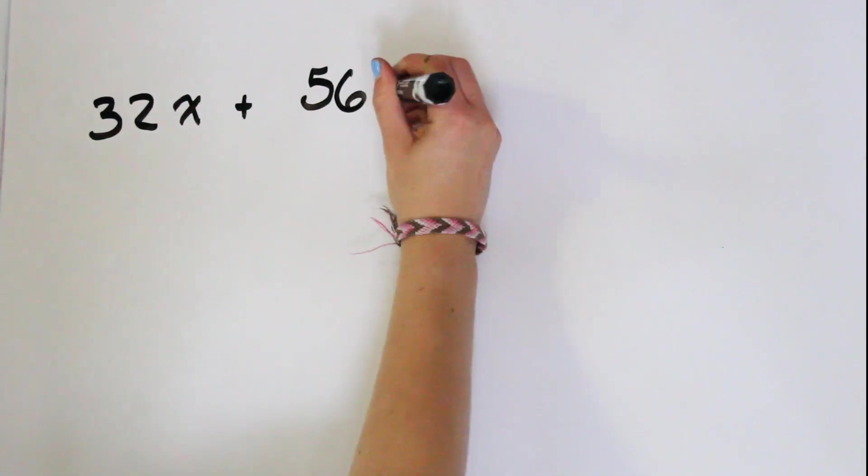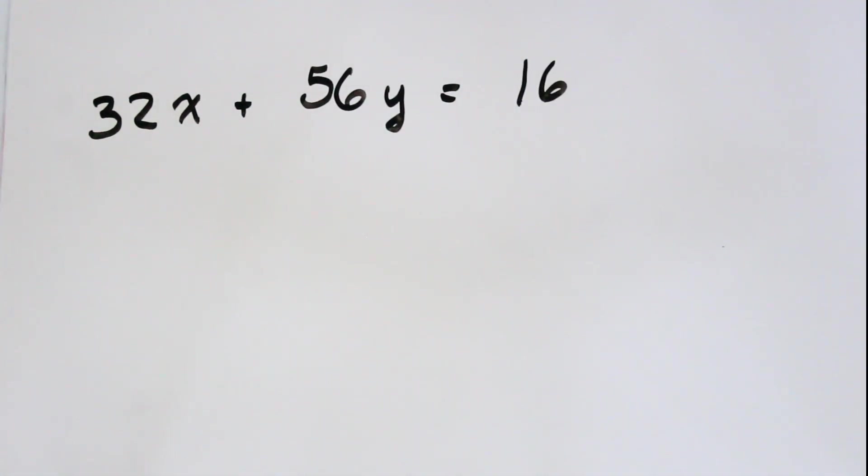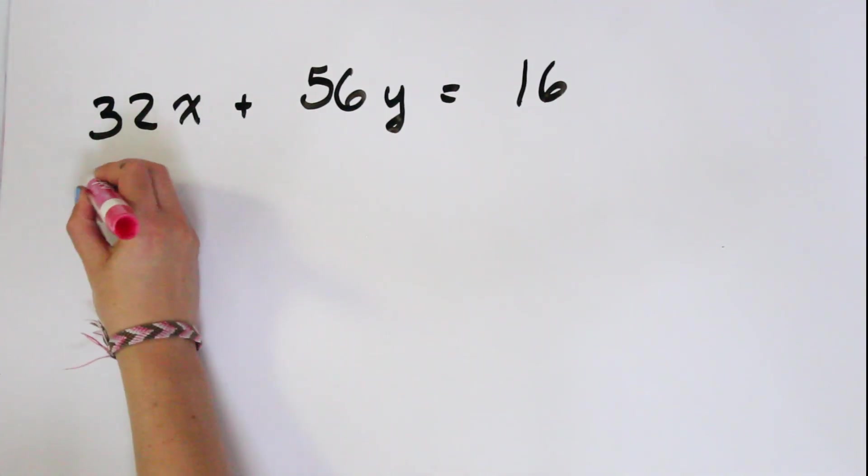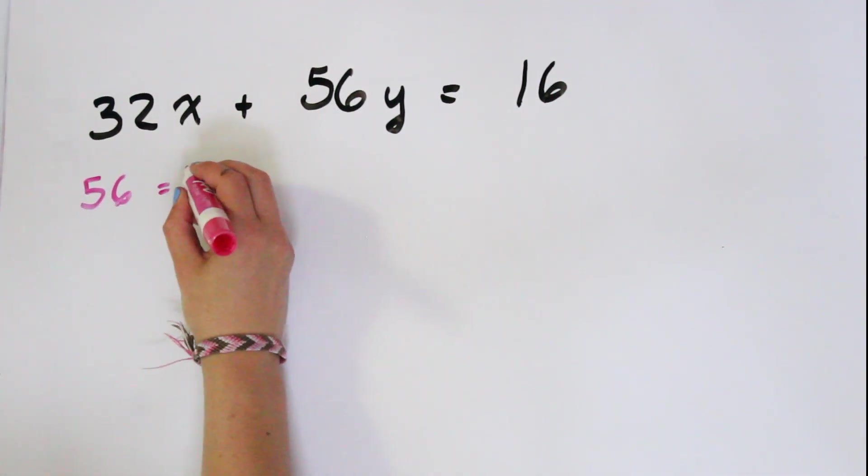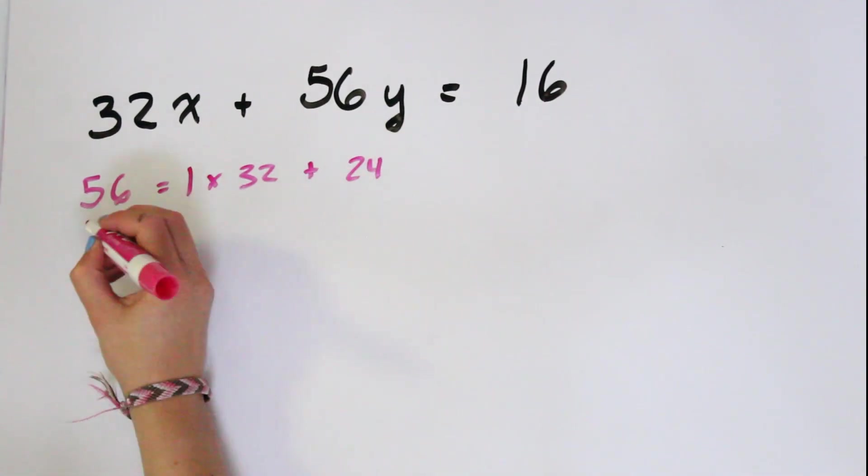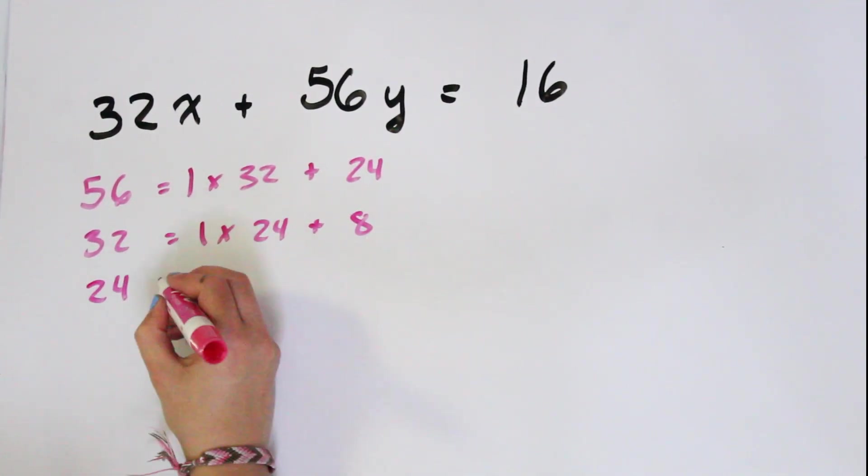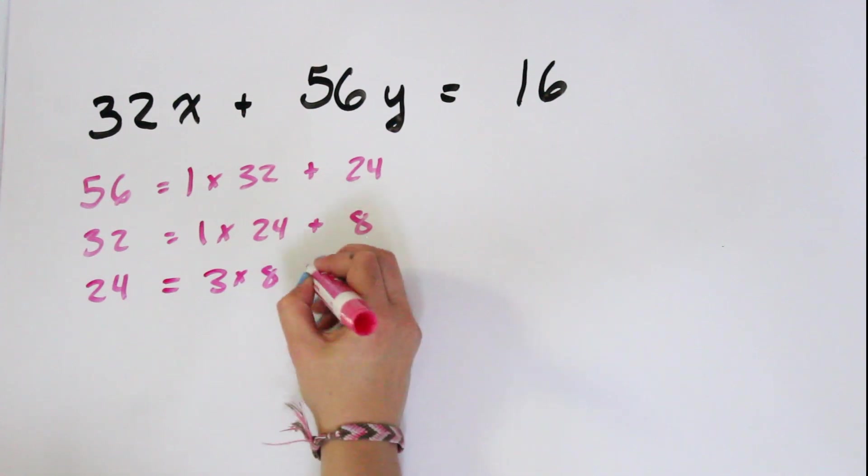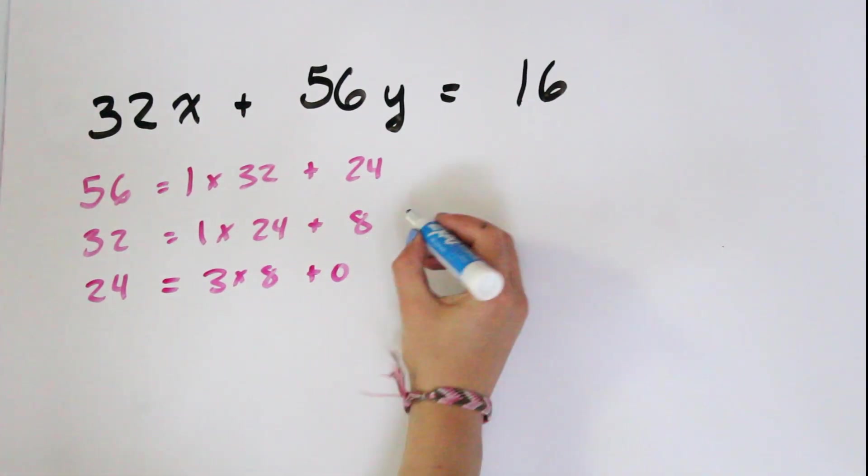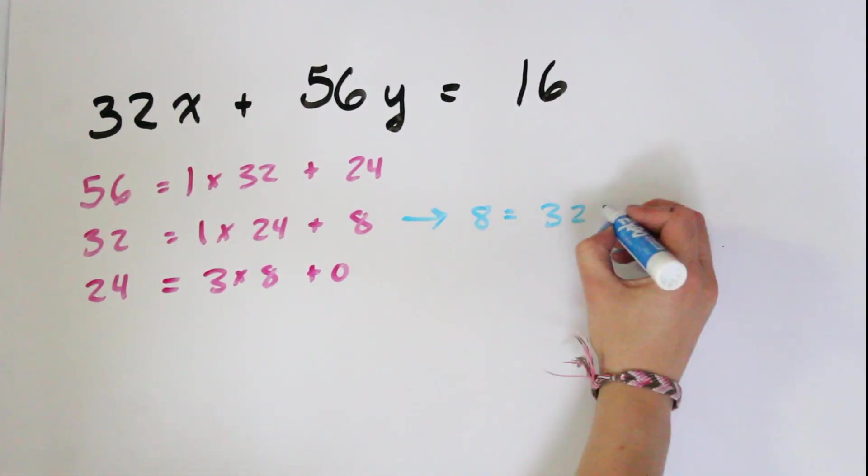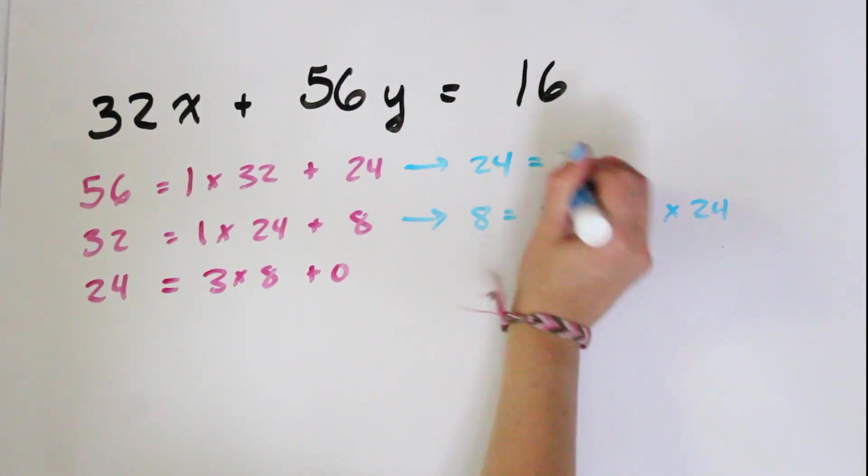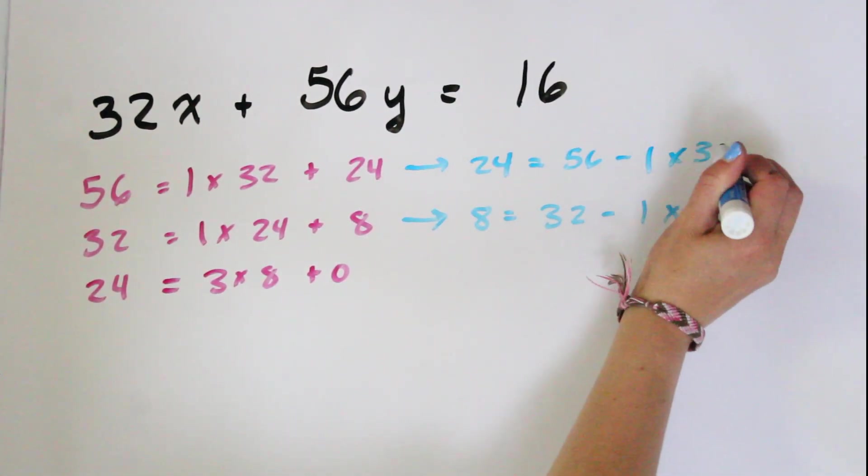So we can use the Euclidean algorithm to help us solve these types of equations. Here we have 32x + 56y = 16. We've already done the Euclidean algorithm for 32 and 56. And we know that their greatest common divisor is 8. And since 16 is a multiple of 8, this equation has a solution.